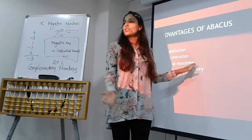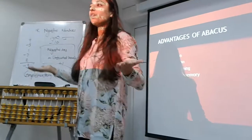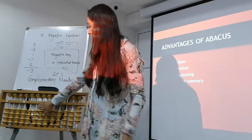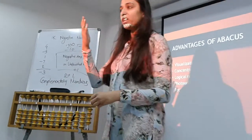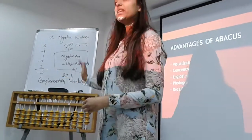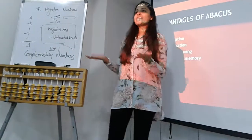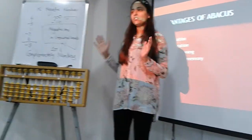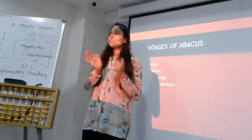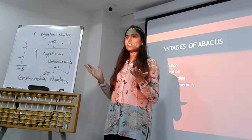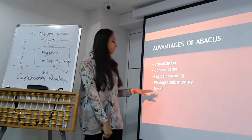Moving ahead — concentration. Obviously, if I don't know anything about the Abacus, it's difficult for me to remember that this is 1, this is 10, this is 100. So you need concentration to realize what each bead stands for. Then there is logical reasoning. As we know, both our hands are working together, hence our logic increases. Our creative mind as well as the logical aspect are both working together, so we are able to solve more logical problems because of this tool.